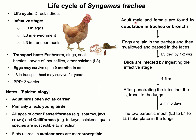Adult male and female parasites are found in copulation in the trachea and bronchi. The female parasite lays eggs in the trachea along with a lot of inflammatory exudates. The eggs are then coughed up, swallowed, and passed in the feces. Development to L3 in the environment takes around one to two weeks under optimum temperature and humidity.